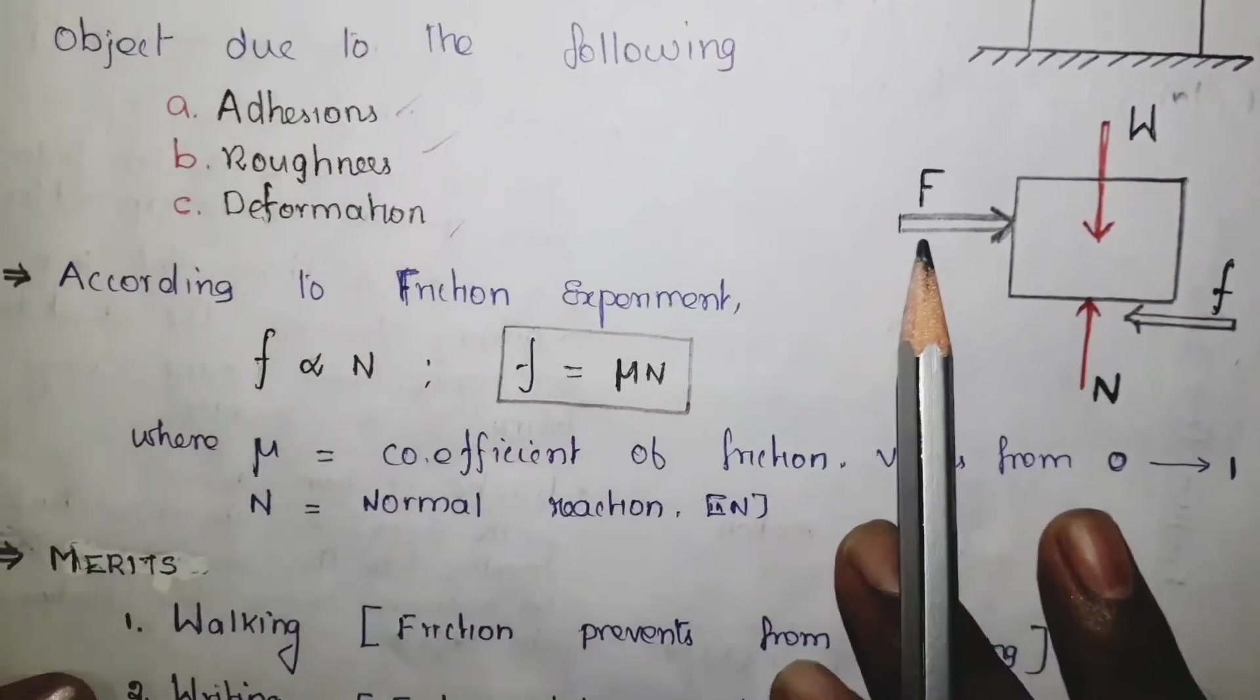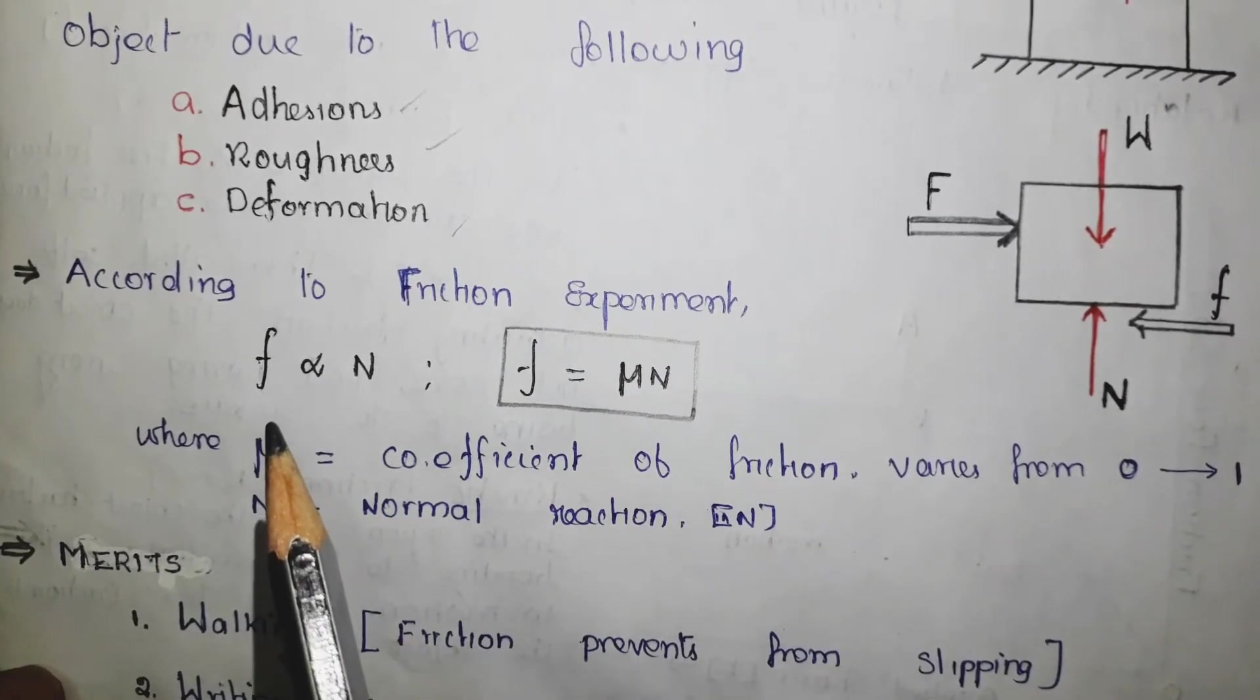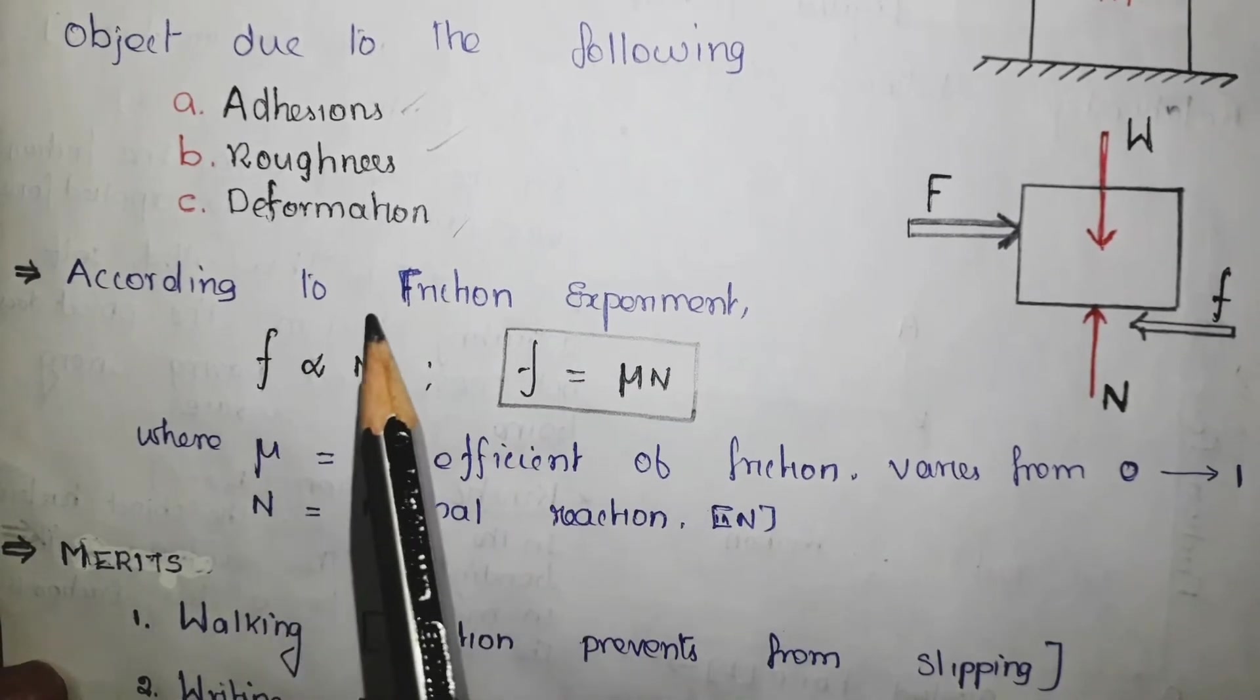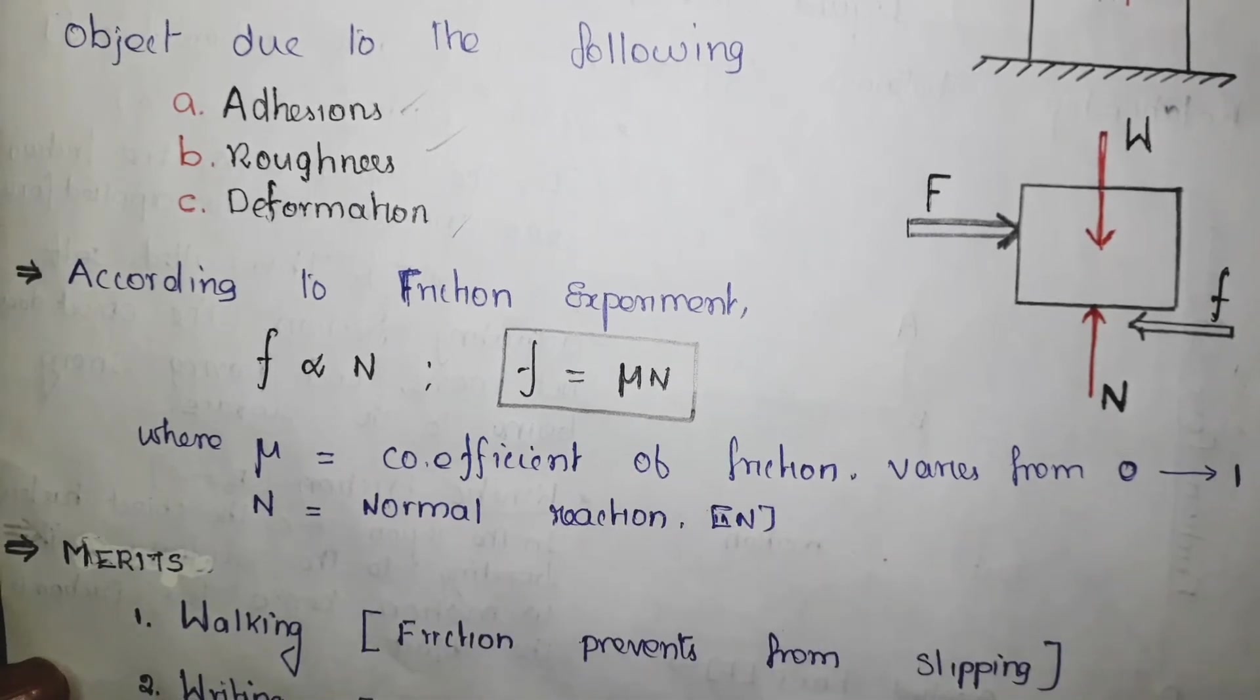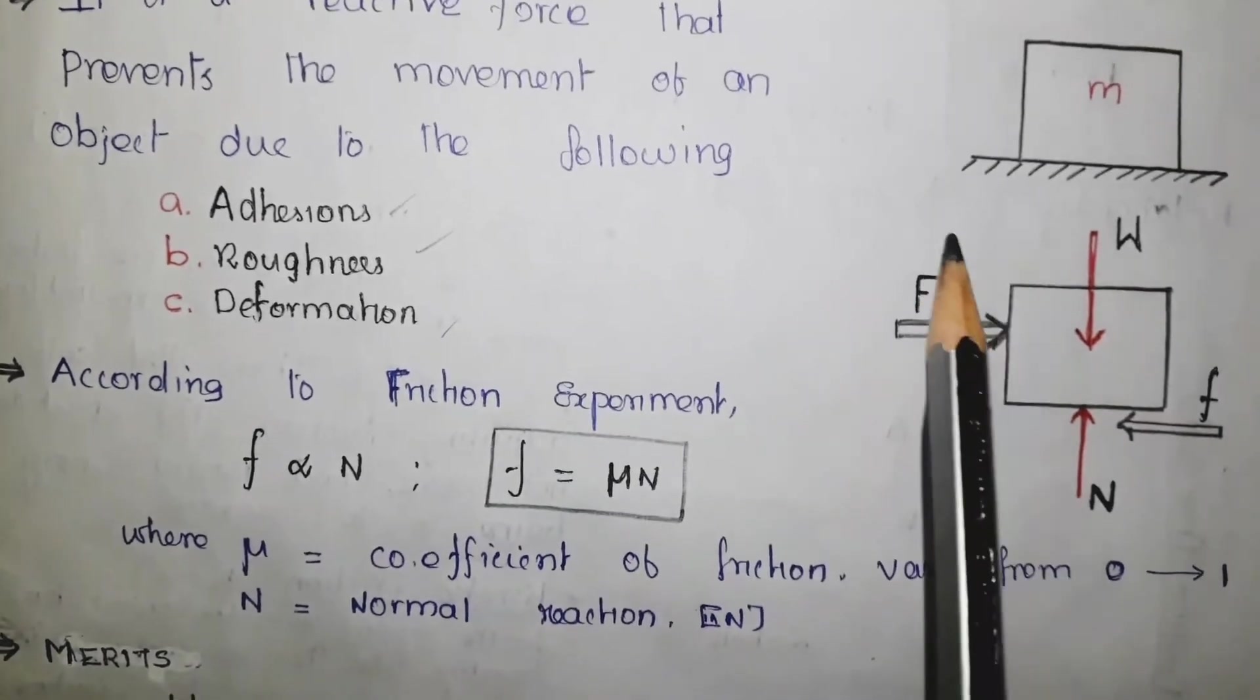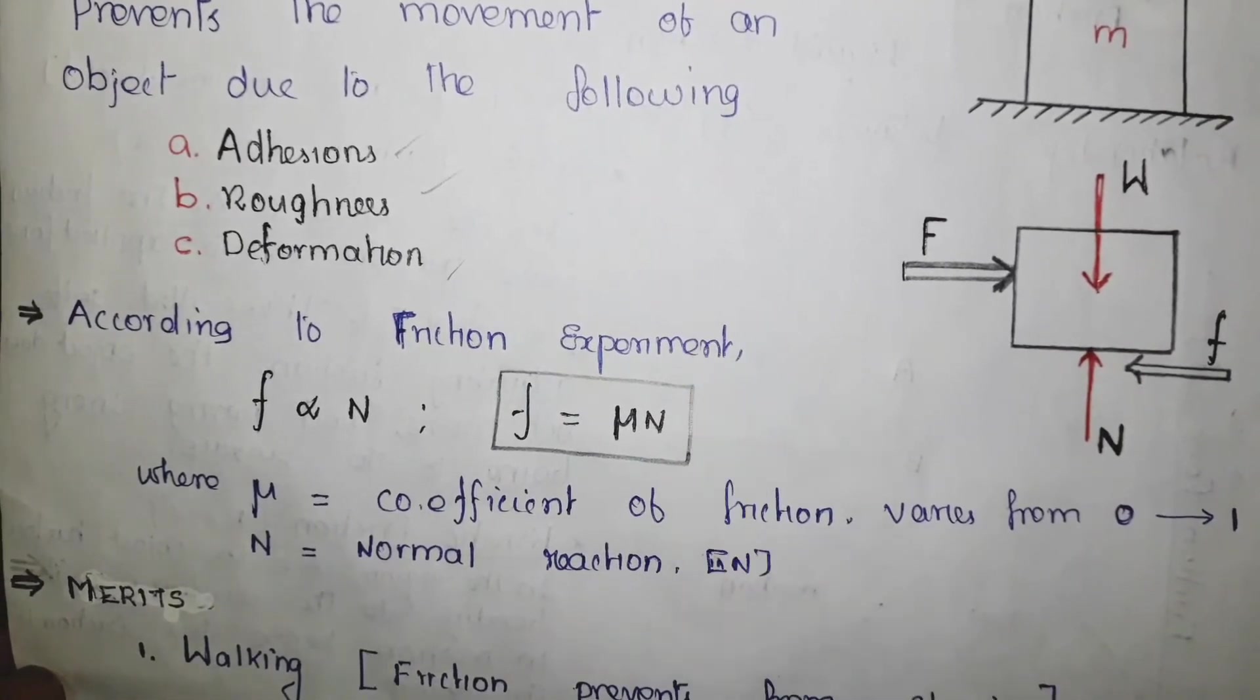Now, let us go to the formula. According to the friction experiment, it is proved that the friction force is directly proportional to the normal reaction. To convert this proportional sign into equality sign, I am going to introduce a variable called mu. This mu is called coefficient of friction that varies from 0 to 1. If there is no friction, then the friction value will be 0. And if there is friction, then you have some value between 0 to 1. If it is 1, then the friction for this case is almost equal to the weight of this object.